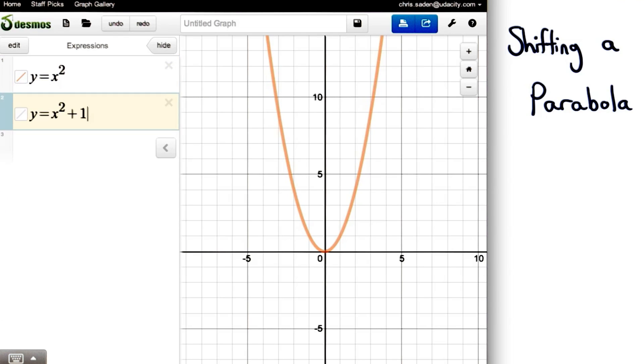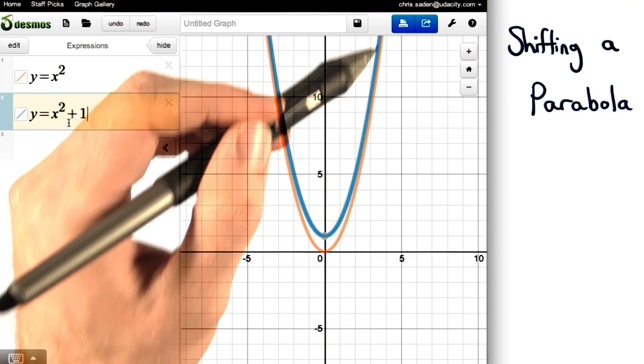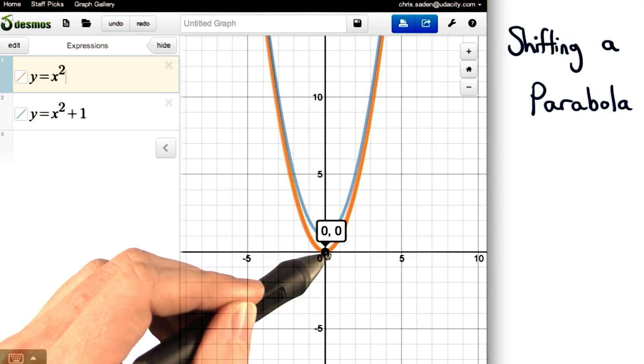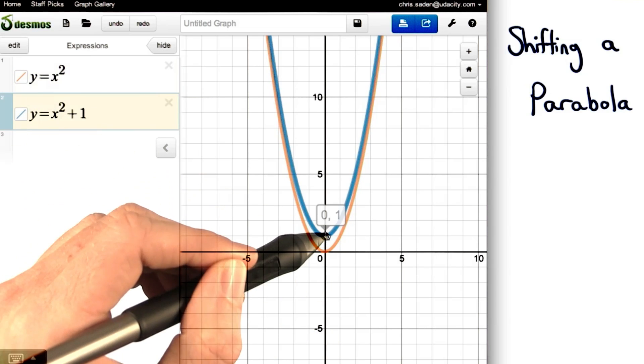If we add one to the equation, we can see that the entire graph shifts up one unit. Notice before that the vertex was at 0, 0. And now our vertex is at 0, 1.